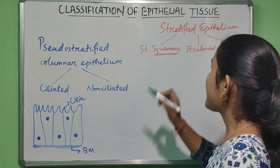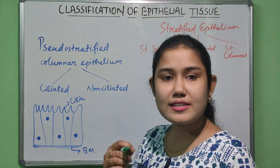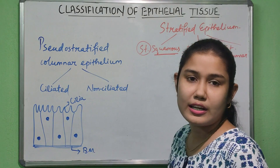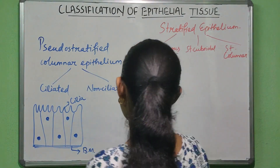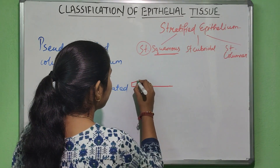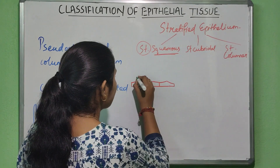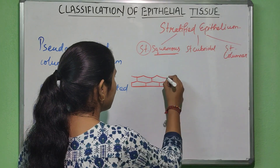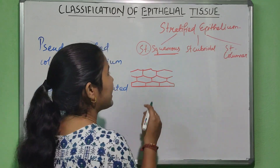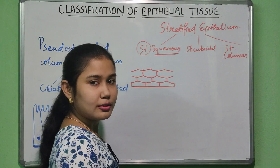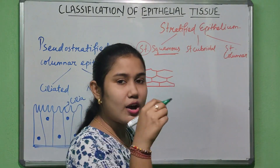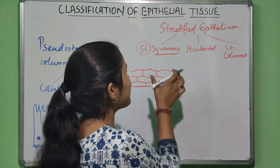Squamous means the cells are thin or flat, and stratified means the cells are arranged in many layers. The cells sit on a basement membrane and are flat. In the actual structure, the deeper cells can be cuboidal or columnar, but the apical layer of cells is squamous — thin or flat — which is why it's called stratified squamous epithelium.